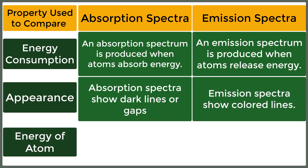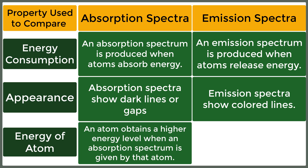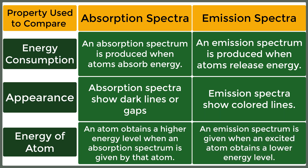An atom obtains a higher energy level when an absorption spectrum is given by that atom. An emission spectrum is given when an excited atom obtains a lower energy level.